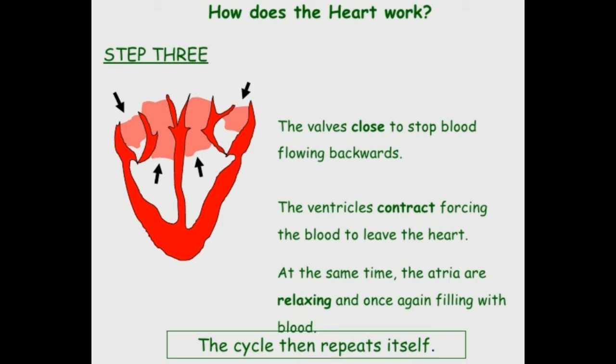Both ventricles contract. From the right side, through the pulmonary artery, impure or deoxygenated blood moves towards the lungs. From the left ventricle, blood is pushed through the aorta to all over the body. Like this, one cycle is completed.